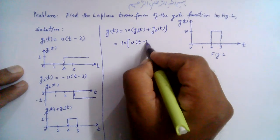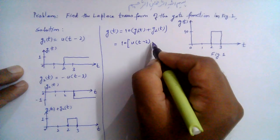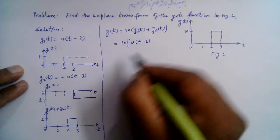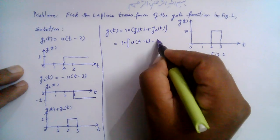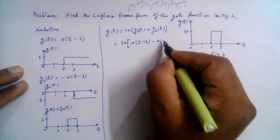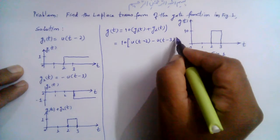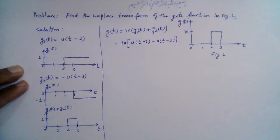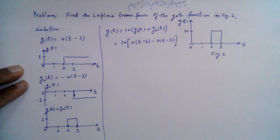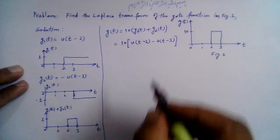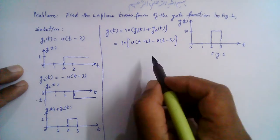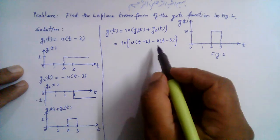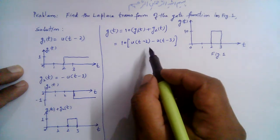So basically we can represent g(t) as 10 times [g1(t) + g2(t)], which gives g(t) = 10 · [u(t-2) - u(t-3)]. We can now take the Laplace transform using the linearity property and the time-shift property.